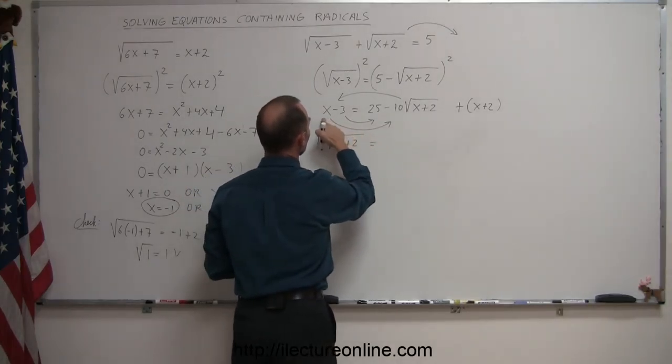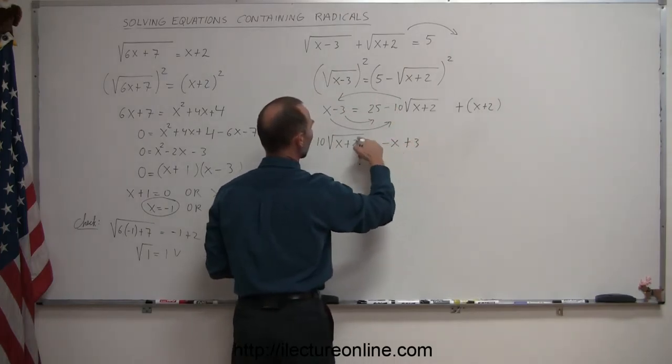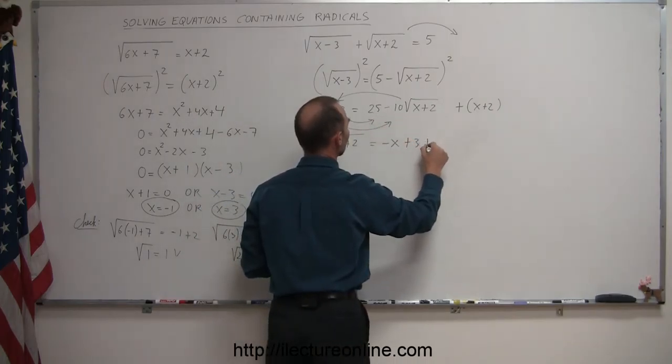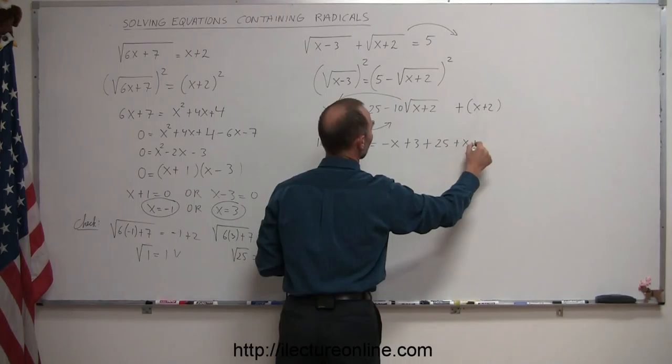So on the left side, we'll get a positive 10 times the square root of x plus 2. On the right side, we'll get a minus x. We'll get a positive 3. Remember when you cross the equal sign, the sign change.